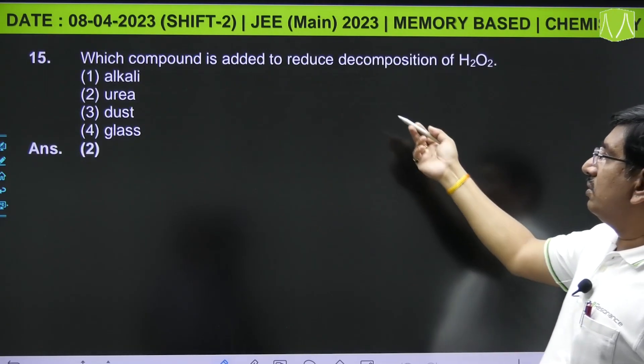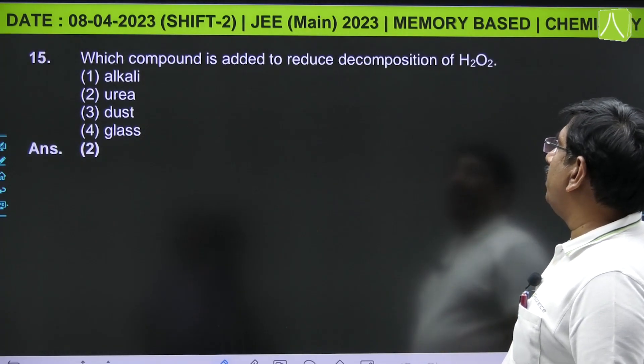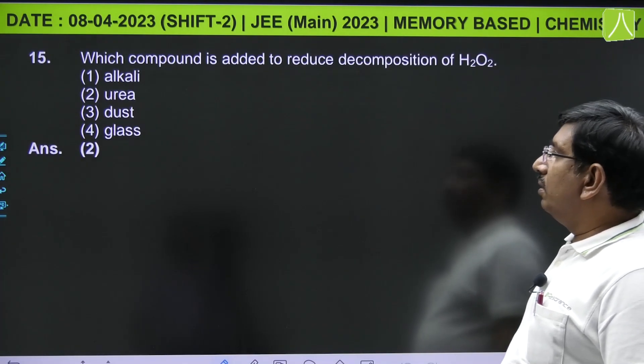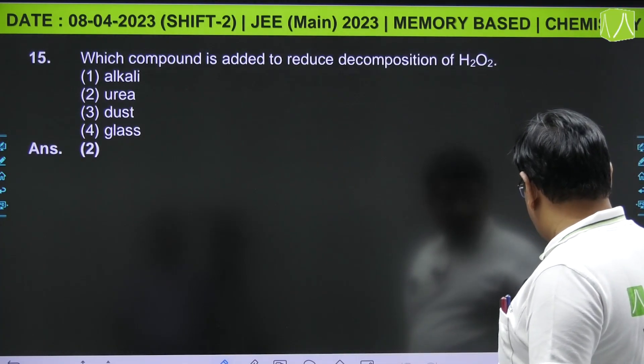So the question asks which compound is added to reduce decomposition? That is urea, because urea can act as the stabilizer.